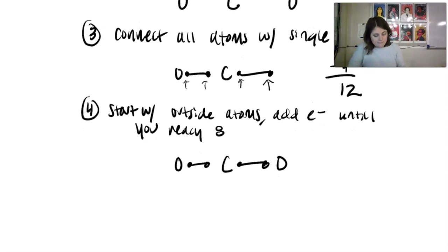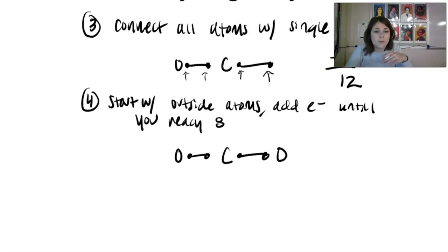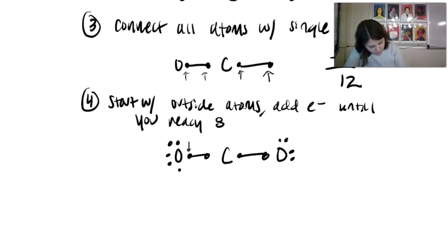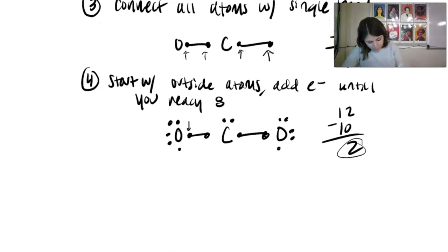Step four: start with outside atoms and add electrons until you reach eight. Oxygen has six valence electrons, so place six around each oxygen. That uses 10 electrons, leaving two. Step five: if you still have electrons remaining, add them to the central atom — so the two remaining electrons go on the carbon, which makes sense because carbon has four valence electrons.